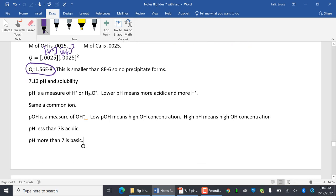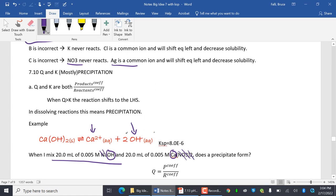pH and solubility. pH is a measure of H positive or H3O positive. Lower pH means more acidic and more H positive. Same as a common ion. pOH is a measure of OH negative. Low pH means high OH negative concentration. High pH means high OH concentration. pH less than 7 is acidic. pH more than 7 is basic. And we kind of sort of did that up here.